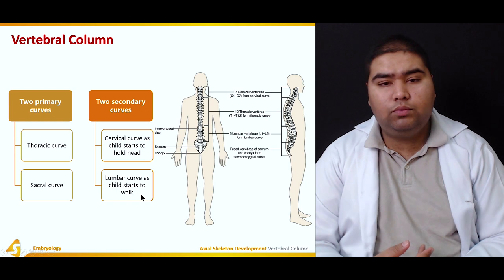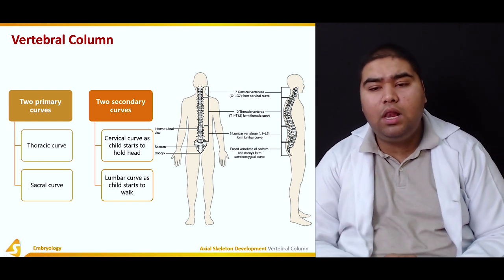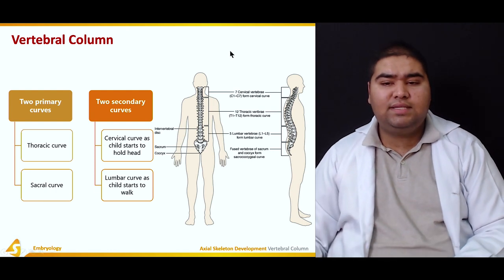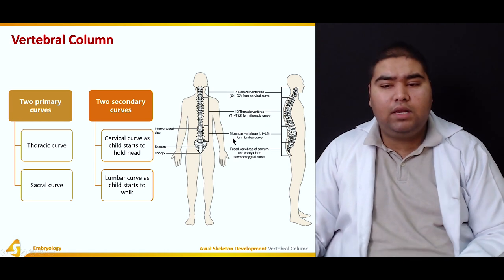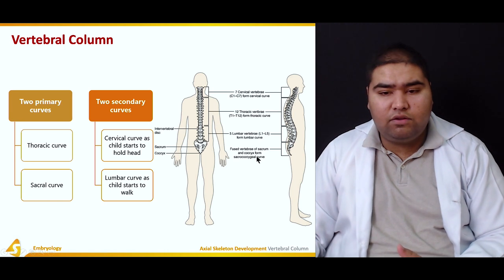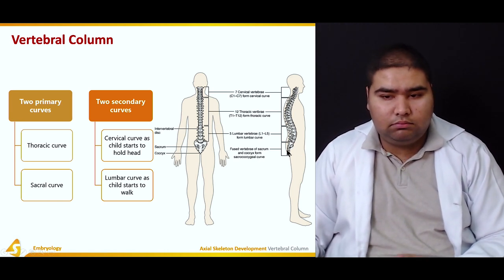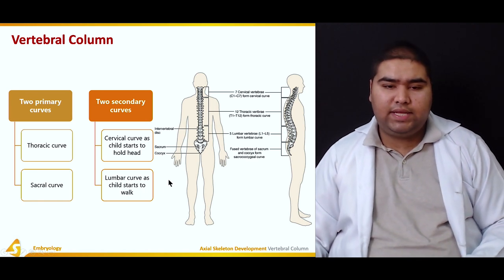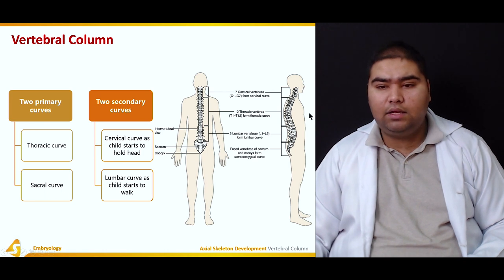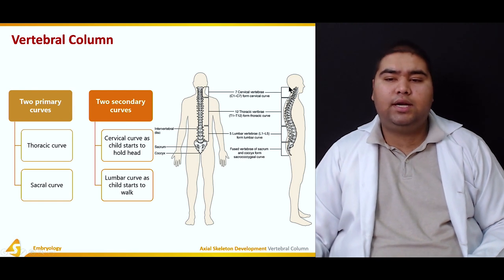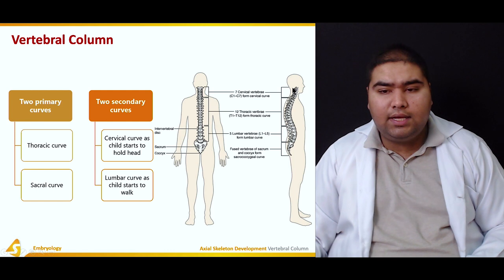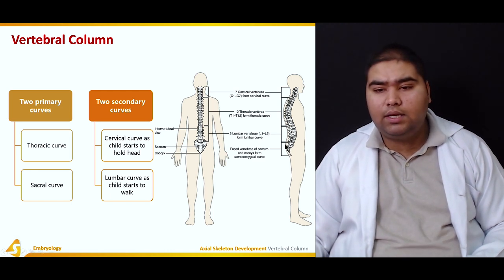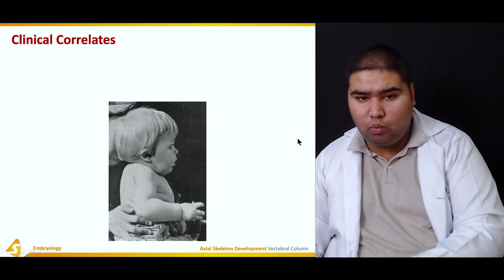The lumbar curve is acquired when the child starts to walk. The vertebral column is divided into four sections: cervical, thoracic, lumbar, and sacrum and coccyx. We have seven cervical vertebrae, twelve thoracic vertebrae, five lumbar vertebrae, and the sacrum and coccyx, which fuse together to form the tail of the vertebral column. The two secondary curves — cervical and lumbar — are attained through development in life.